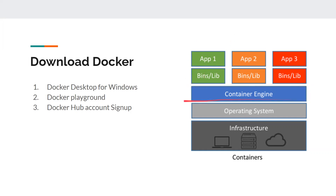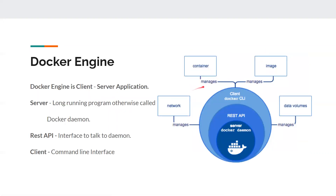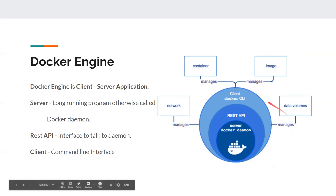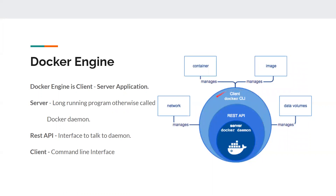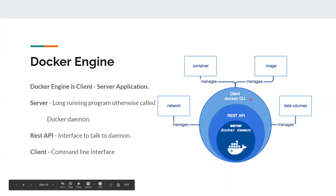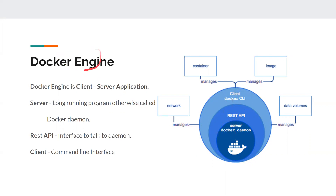If you notice, we have a container engine. We will see how this Docker engine is structured. We have a Docker command line interface — this is a client. We have a REST API in between the Docker daemon and Docker client. So we have three components: a client, a REST API, and a server. The Docker engine is a client-server architecture, just like REST services.